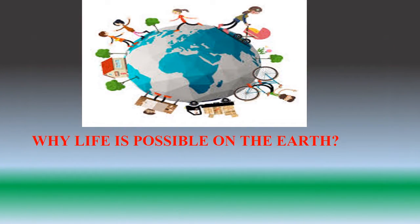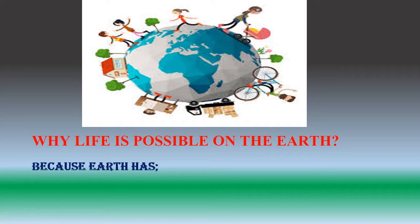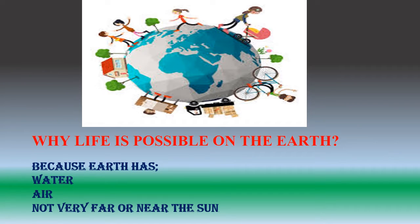As we all know, there are eight planets in the solar system: Mercury, Venus, Earth, Mars, Jupiter, Saturn, Uranus and Neptune. Do you ever think why life is possible only on the earth? Because earth is the only planet that has water, that has air, and it is not very far or near the sun. These are the things that have made life possible on the earth.